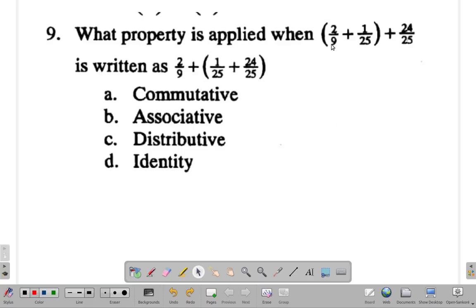What property is applied when this expression is written as this? Is it commutative, associative, distributive, or identity? What do you see? Let's work through it. Now, I have to remember something here.